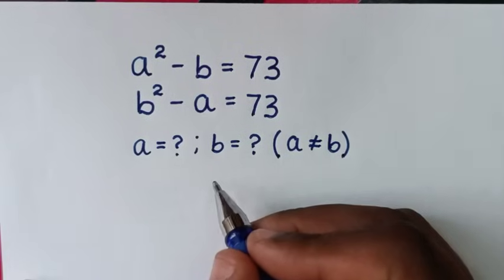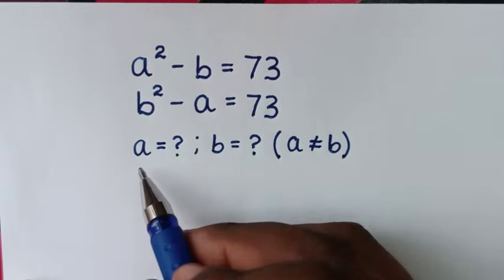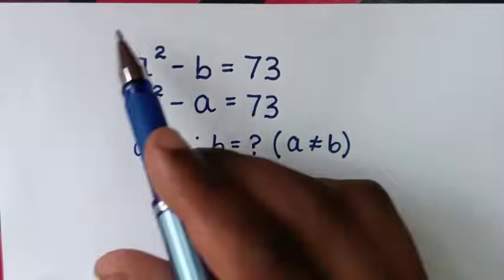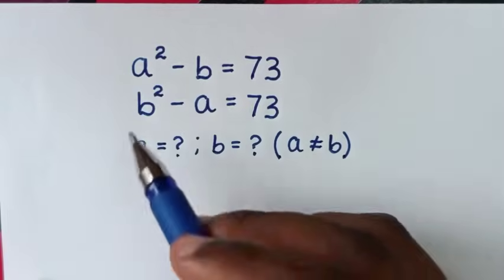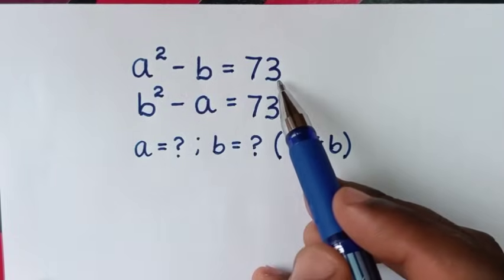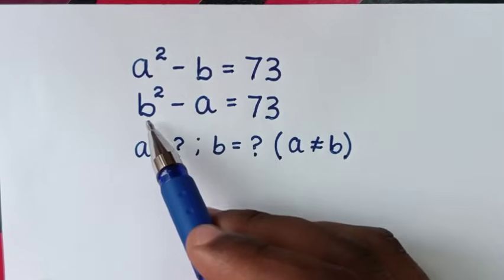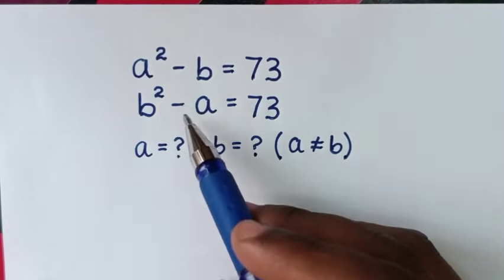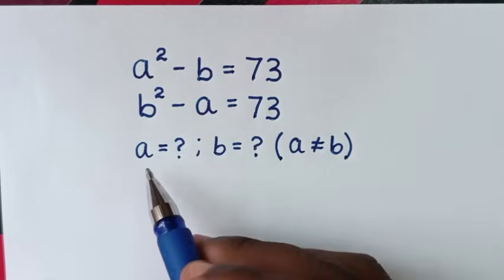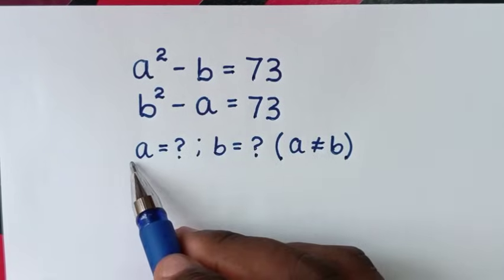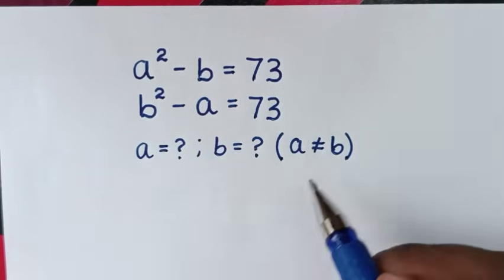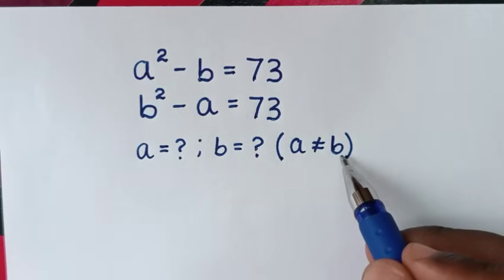Hello, you are welcome to solve this math problem, which is a squared minus b is equal to 73, and b squared minus a is equal to 73, to find the values of a and b, so that a is not equal to b.